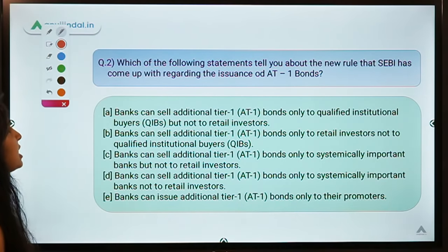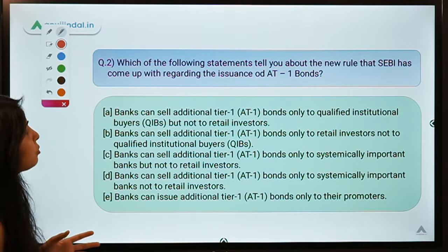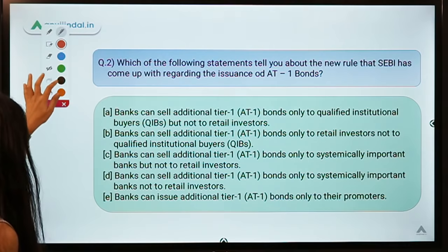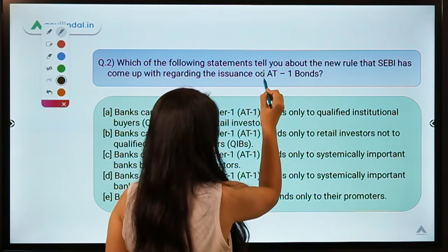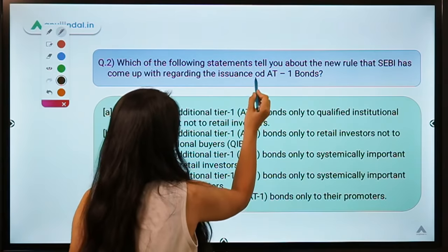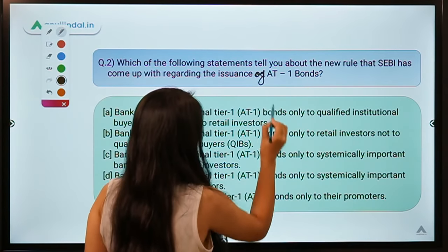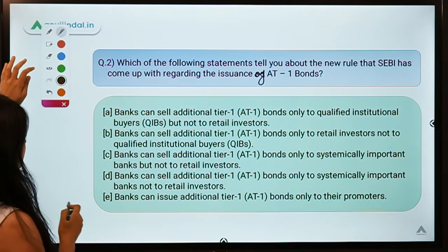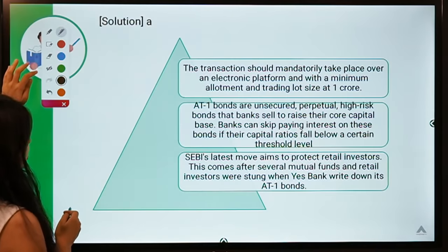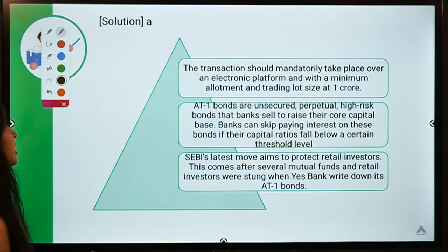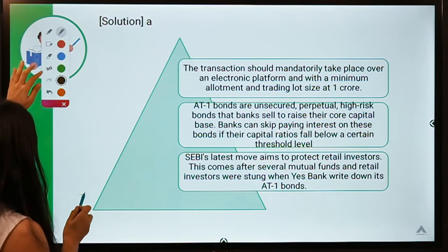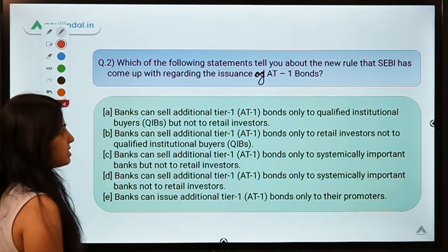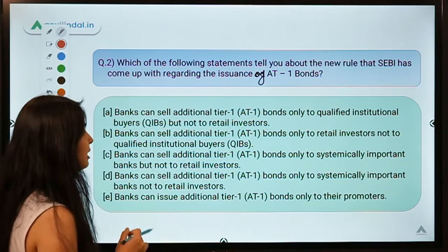Question number two: 'Which of the following statements tells you about the new rule SEBI has come up with regarding the issuance of AT1 bonds?' I hope we all know what AT1 bonds are. Moving to the solution — the correct answer is option A.